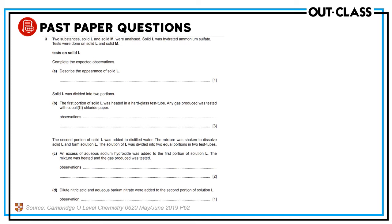Two substances, solid L and solid M, were analyzed. Solid L is hydrated ammonium sulfate; nothing was told about M. Complete the expected observation. The appearance of L — it has no transition metal ion, so it will be a white solid. Solid L was divided into two portions; the first portion was heated in a glass tube, and any gas produced was tested with cobalt chloride paper.